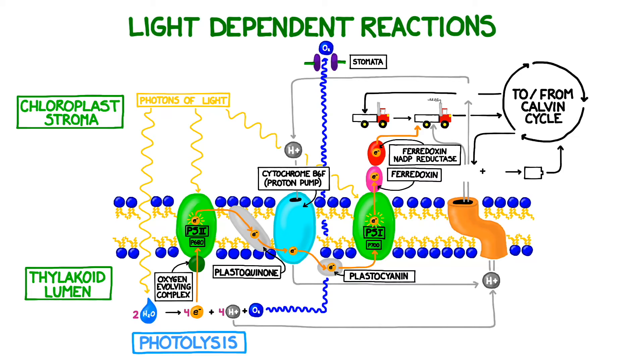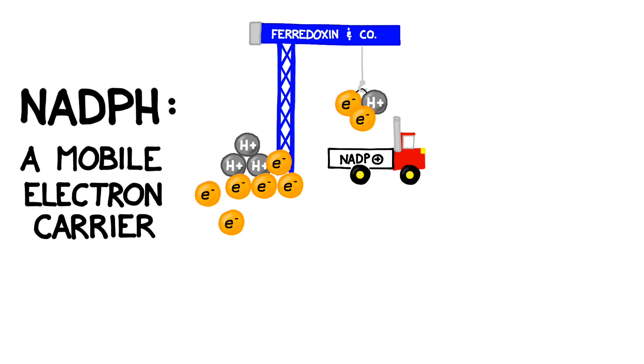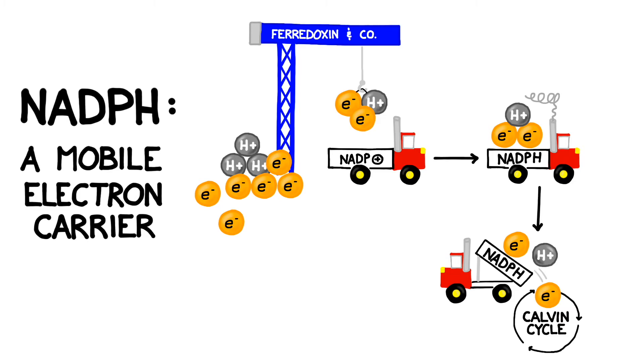Next we're going to recharge NADP+. Ferrodoxin NADP reductase loads NADP plus up with two electrons and a hydrogen also attaches to the molecule as well. NADPH is known as a mobile electron carrier. Its job is to move hydrogen and electrons from one place to another. Each NADPH molecule delivers a proton and two electrons to the Calvin cycle where they are needed. Then the empty NADP plus molecule returns back to pick up some more.